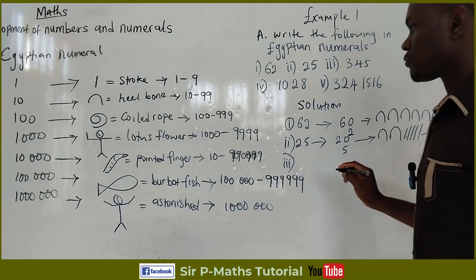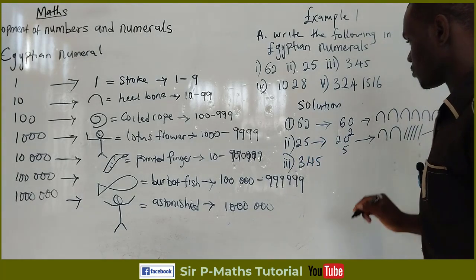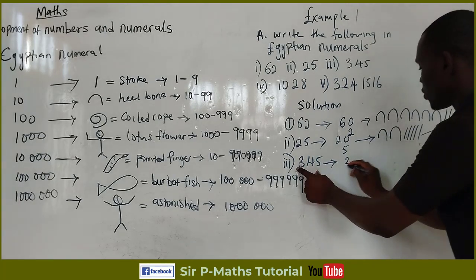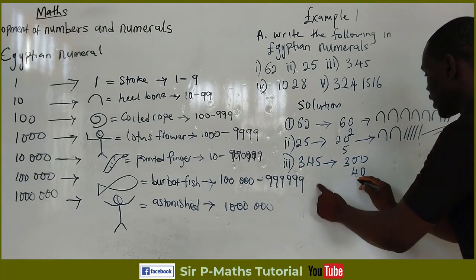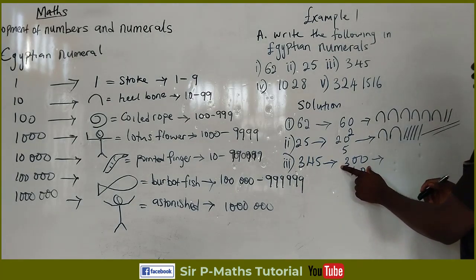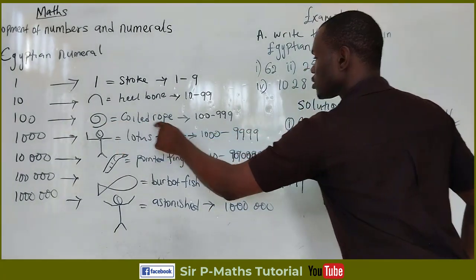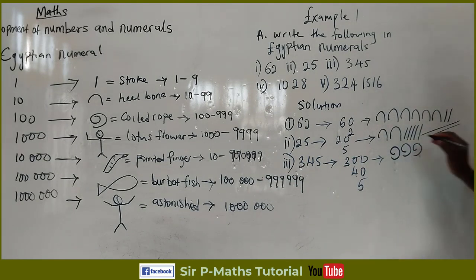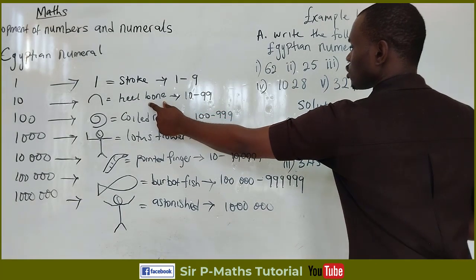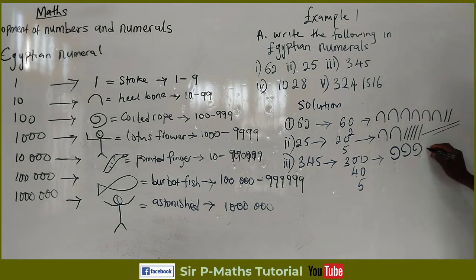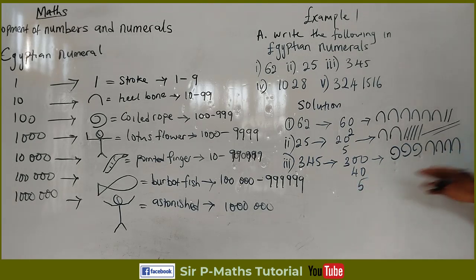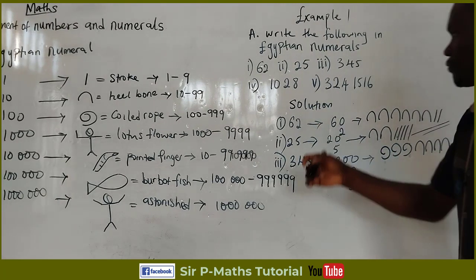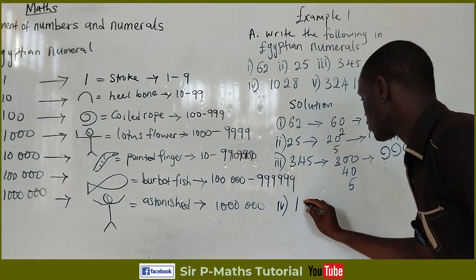Next is 345. I can split it as 300, 40, and 5. For 300, since it is in the hundreds category, I'll use the coiled rope three times — one, two, three. For 40, since it falls in the tens category, I'll use the heel bone four times. Then I'll use five strokes to represent 5. So for an Egyptian, this combination represents 345.